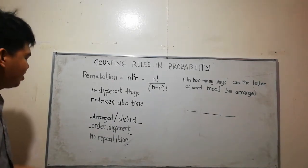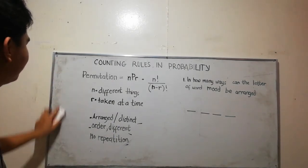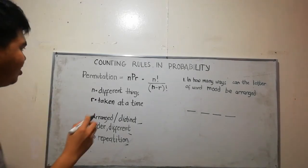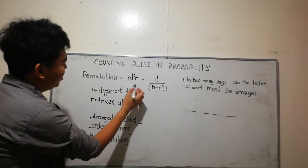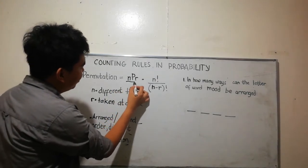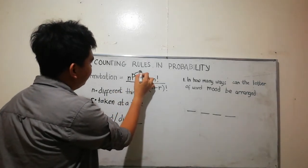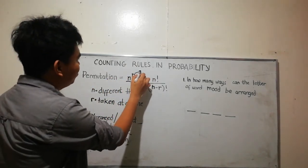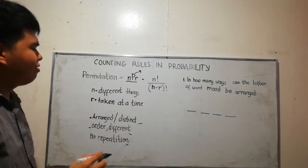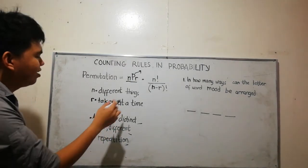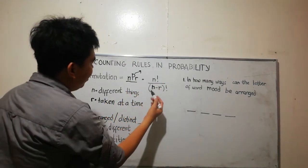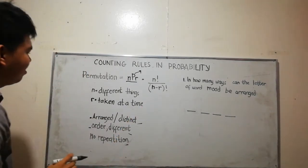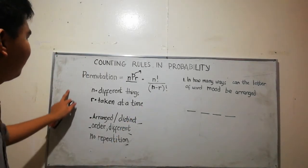The formula for permutation is nPr. You can see this P in your calculator. It is equal to n factorial over n minus r factorial, where n is different things and r is taken at a time.